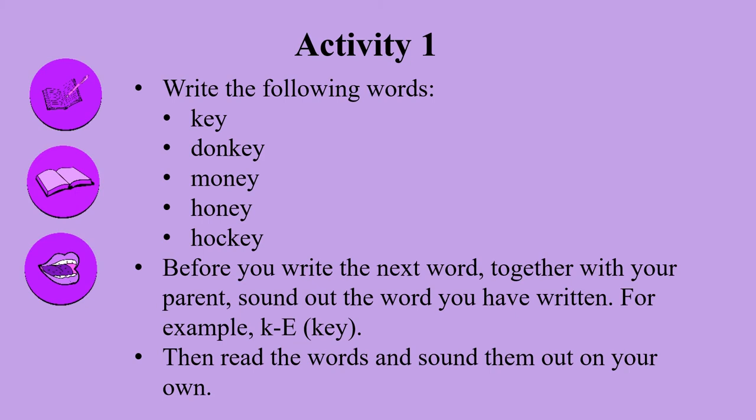Before you write the next word, sound out the word with your parents that you have written. For example: k, ee — key. Donkey: d, o, n, k, ee — donkey. The letters E and Y make the sound ee.